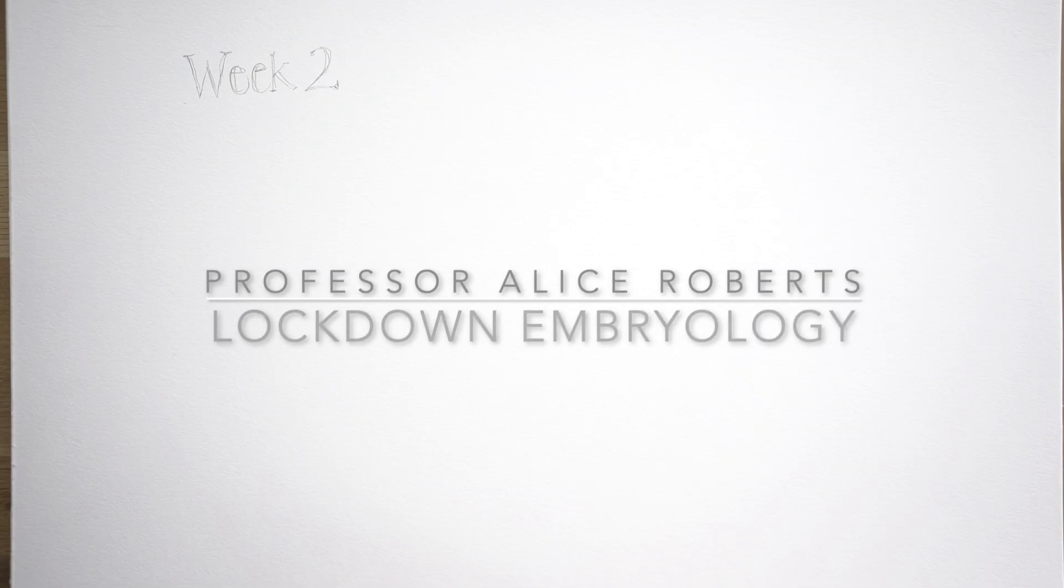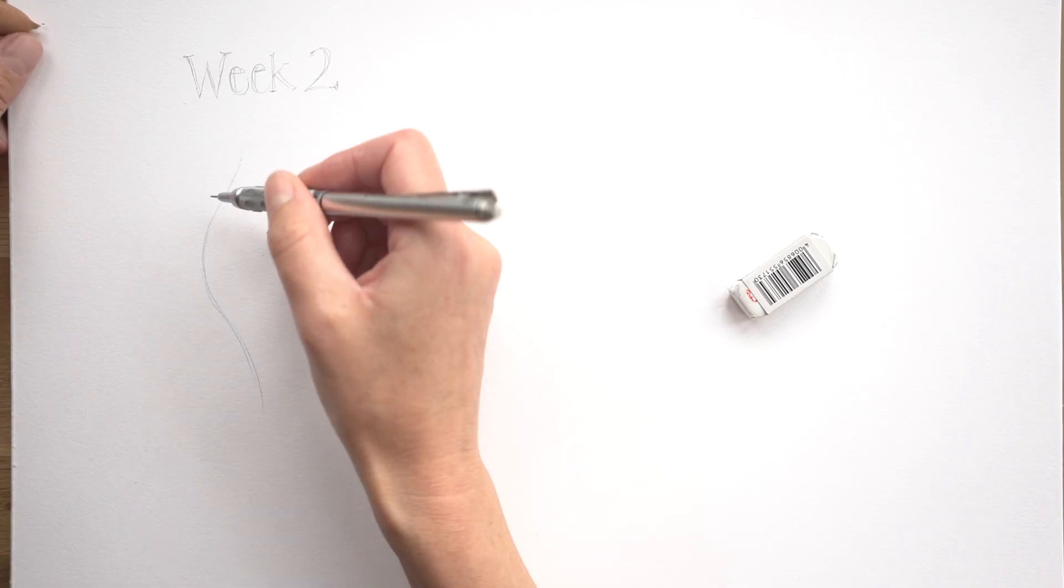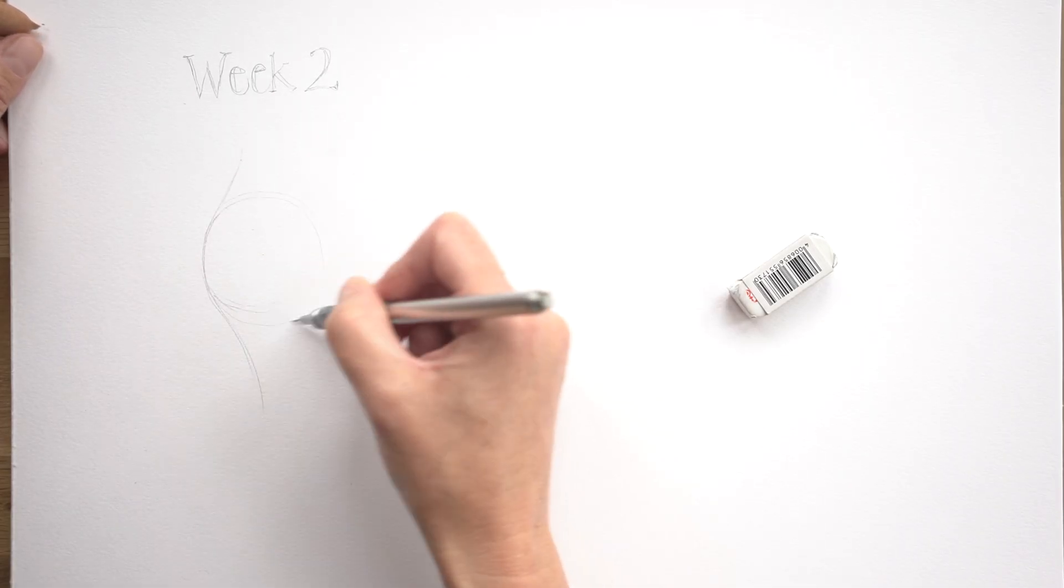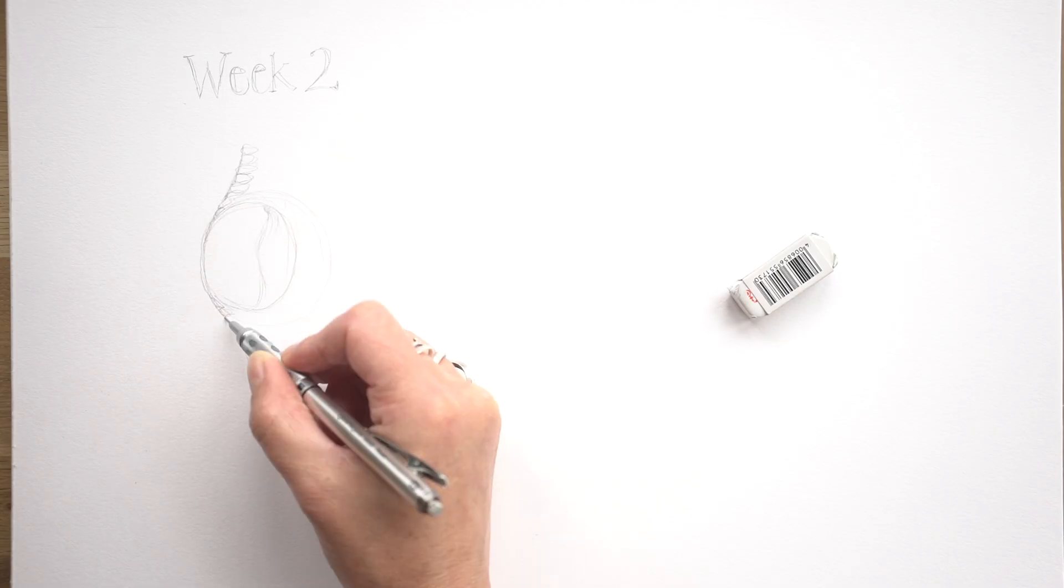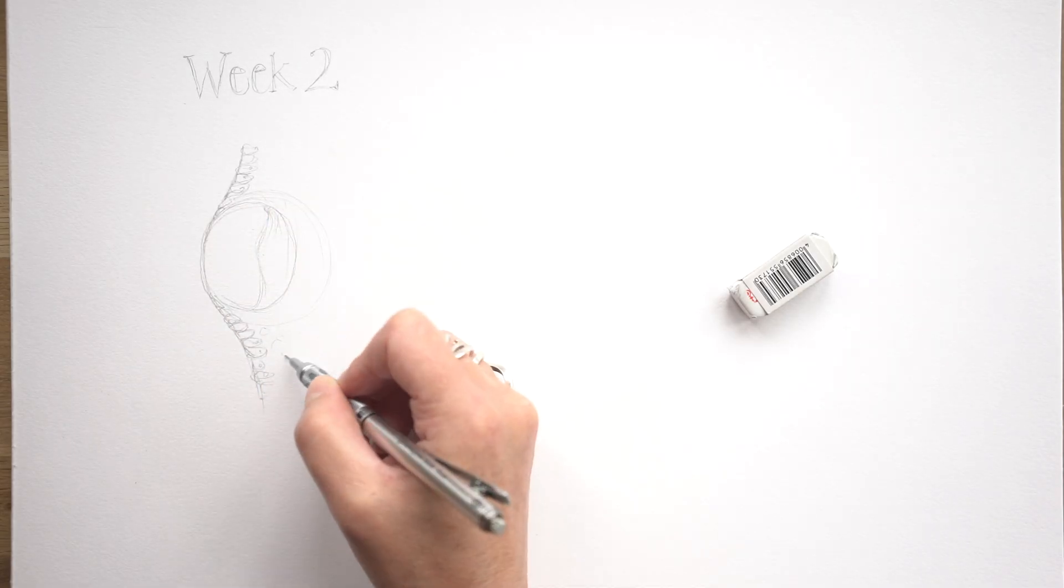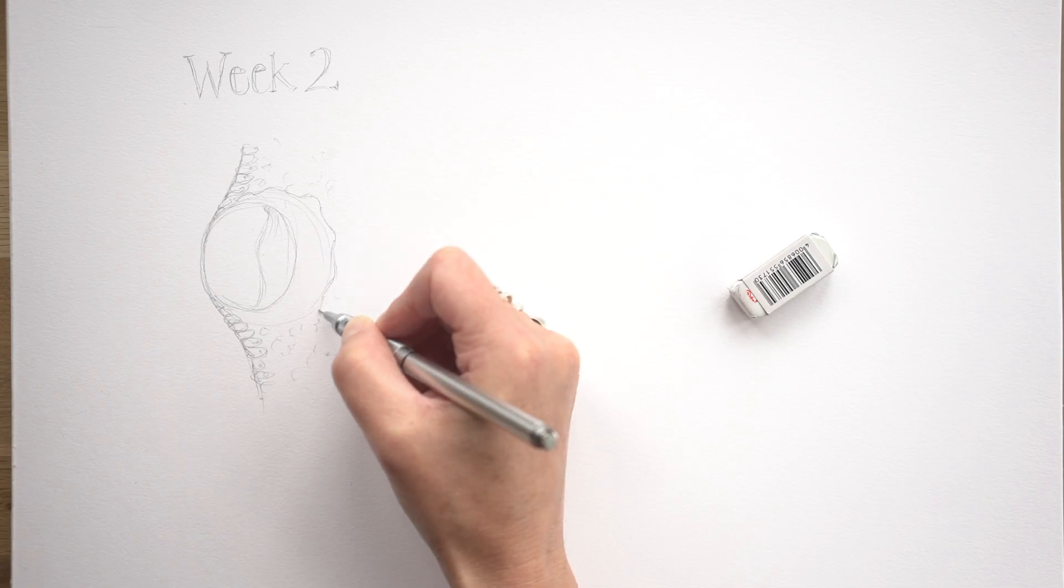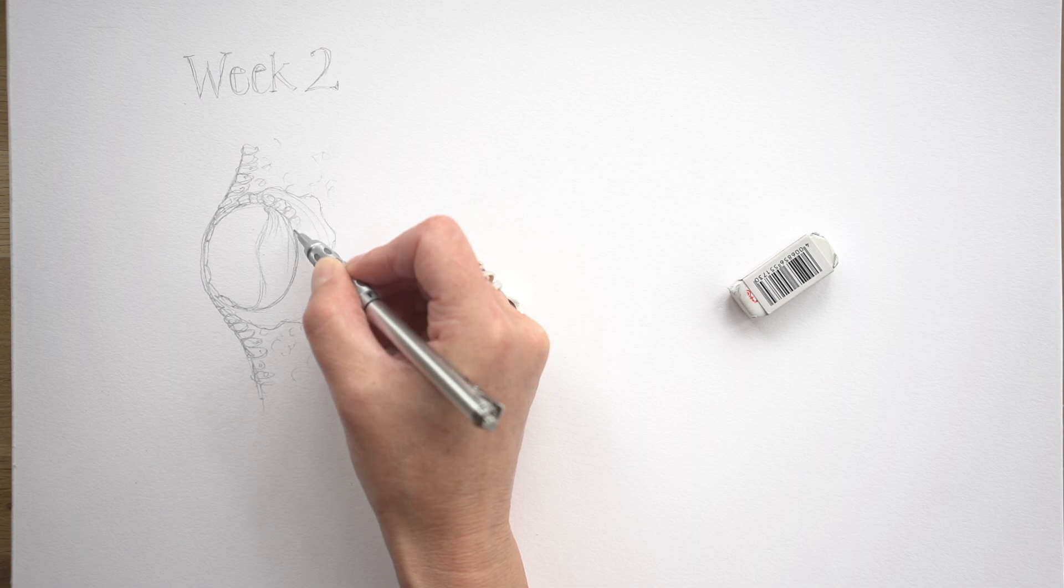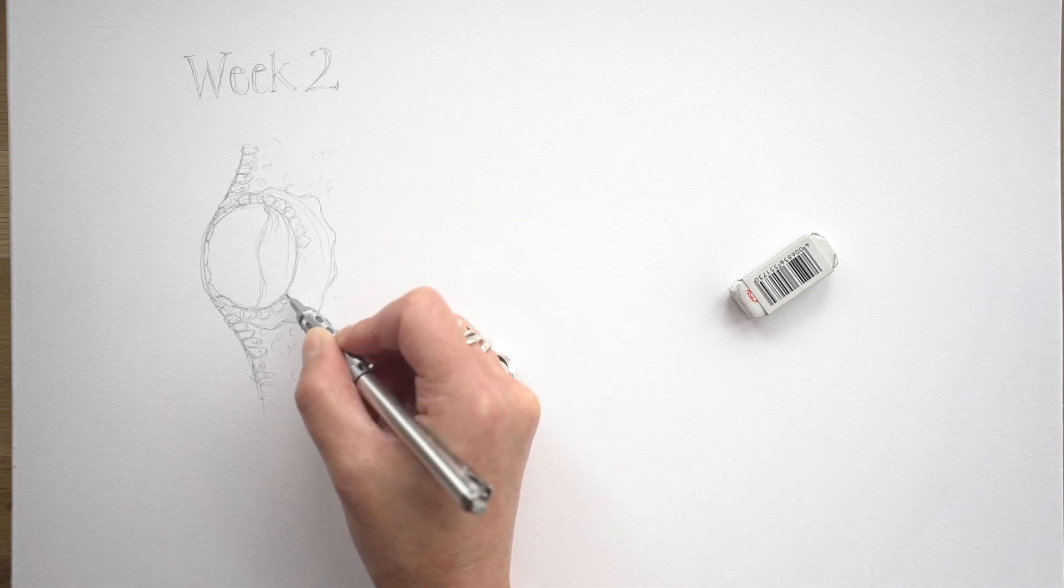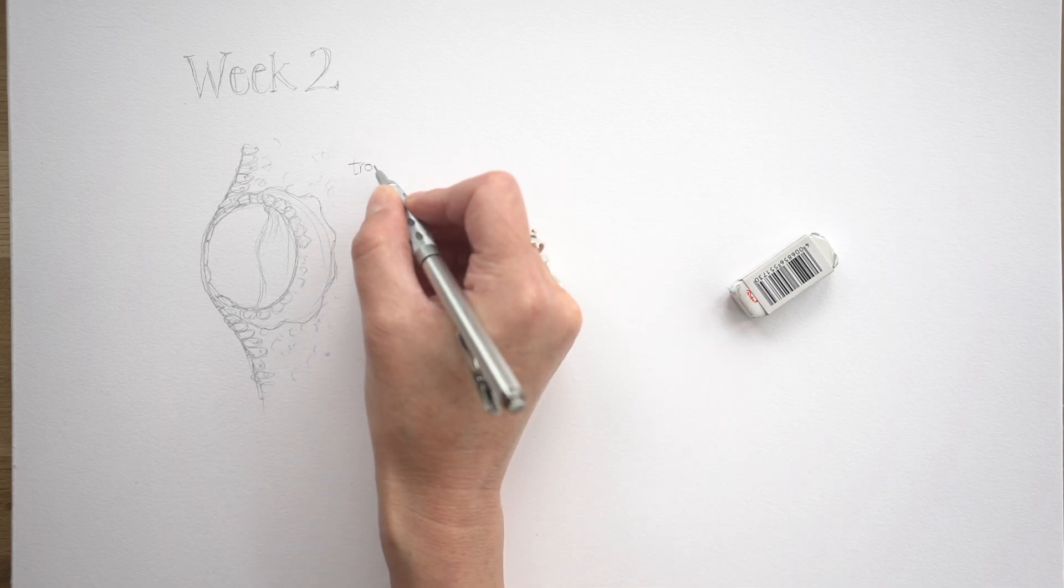This is my second lockdown embryology video, and this time we're moving into the second week of development after the point of fertilization of the egg by the sperm, which was covered in the first video. By the end of the first week, the developing embryo has arrived in the uterine cavity, has settled onto the lining of the uterus, the endometrium, and has burrowed into it. So we're seeing that embryo having implanted in the uterus.